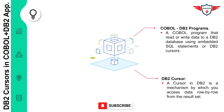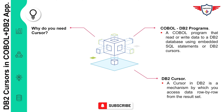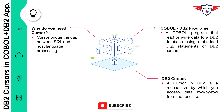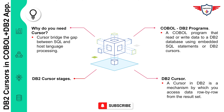Why do you need a cursor in your COBOL DB2 applications? The DB2 cursor was designed to bridge the gap between SQL and the host language processing. The host language — whether COBOL, .NET, Java, C++, or any other programming language — is capable of processing a single record at a time, whereas SQL operates on a set of rows. Without a DB2 cursor, it is absolutely impossible for a COBOL program to navigate through a set of rows created by an embedded SQL statement.